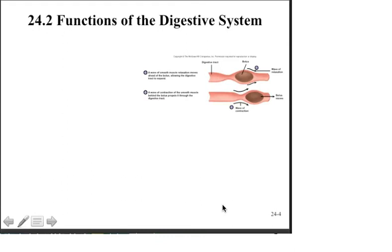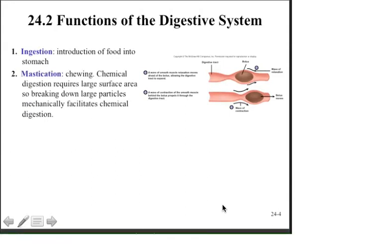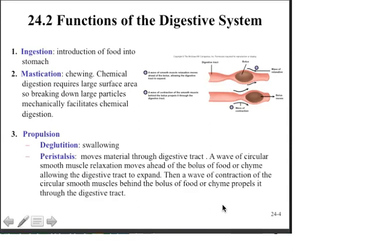The voluntary part of digestion ends after we chew and we swallow. After that, the movement of food through the pipe goes on autopilot via a sequence of muscular contractions in the smooth muscle that lines the tract, called peristalsis. Ingestion describes the introduction of food into the stomach. Mastication is the mechanical processing of food in the oral cavity — this is chewing. Propulsion is accomplished by two processes: deglutition, which is the voluntary act of swallowing, and then peristalsis, which dominates most of the rest of the trip, pushing food from the esophagus through the stomach, through the small intestine, to the large intestine, and on to the rectum and the anus.